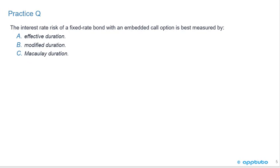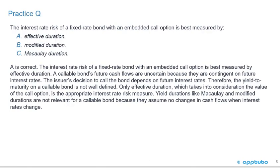Two practice questions finish this LOS. First: the interest rate risk of a fixed-rate bond with an embedded call option is best measured by A, effective duration; B, modified duration; or C, Macaulay duration. A is correct. A callable bond's future cash flows are uncertain because they're contingent on future interest rates, so a yield to maturity is not well defined. Only effective duration, which accounts for the value of the call option, is appropriate. Yield durations like Macaulay and modified durations are not relevant because they assume no change in cash flows when interest rates change.